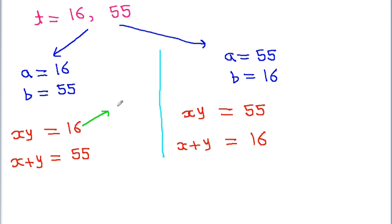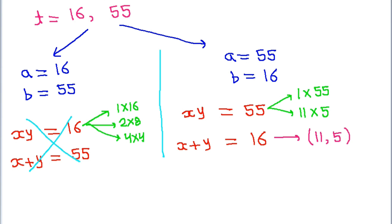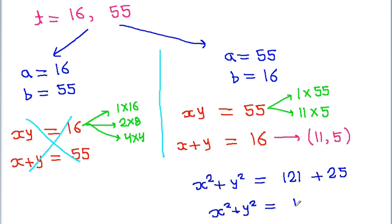Since x and y are positive integers, 16 can be written as 1 times 16, 2 times 8, or 4 times 4 — none of these pairs sum to 55, so the first case is not possible. For 55, it can be written as 1 times 55 or 11 times 5, and 11 plus 5 is 16. So x equals 11 and y equals 5. Therefore, 11 squared is 121 and 5 squared is 25, giving x squared plus y squared is equal to 146.